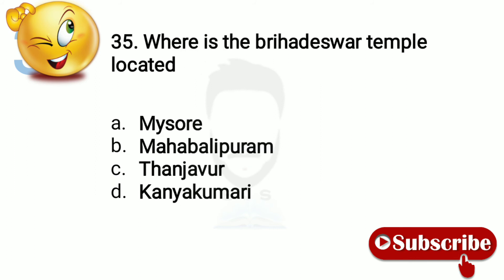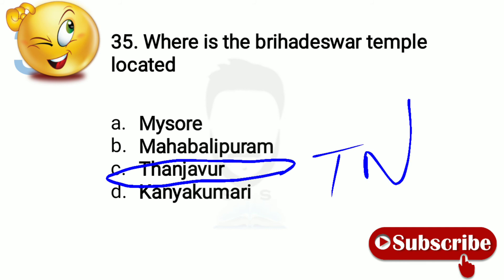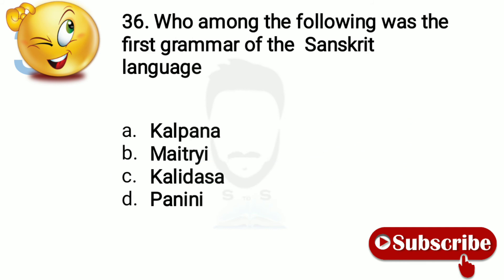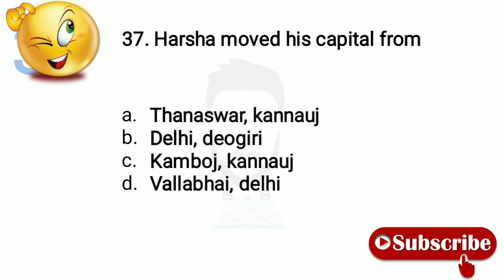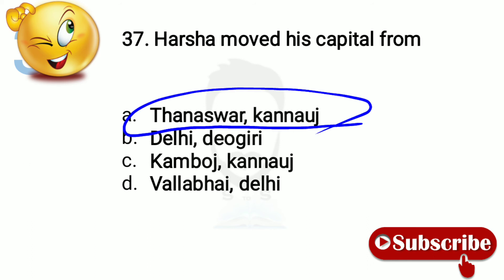Question 34: Where is the Brihadeeswara temple located? Option number C, Tanjavur, Tamil Nadu. Question 35: Who among the following was the first grammarian of the Sanskrit language? Option number D, Panini. Question 36: Harsha moved his capital from Thaneshwar to Kanauj.